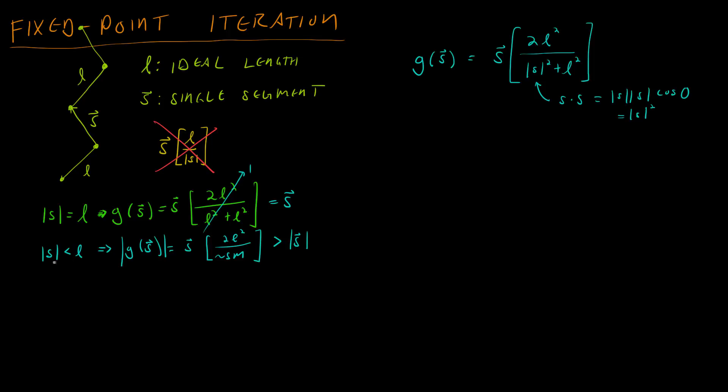The length of G of s is slightly bigger than the length of s, which is good because we want s to be length L. So if we run it through this function, it gets us slightly more there. And if it's slightly bigger than L, then the denominator is going to be slightly larger instead of slightly smaller, and so we're going to get a slightly smaller vector.